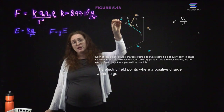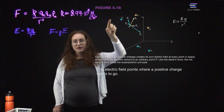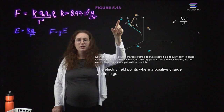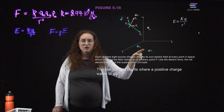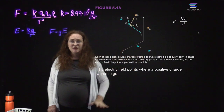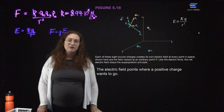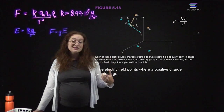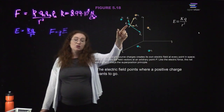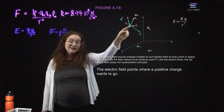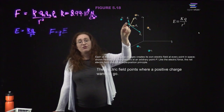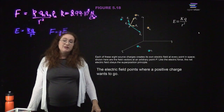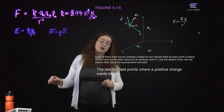Here you can look at a case with multiple source charges. Each of them creates its own electric field. Because the electric force is additive, the electric fields are additive too. At a test point P, the net electric field is the sum of the electric fields from all of the charges present. The electric field points in the direction a positive test charge would want to go.